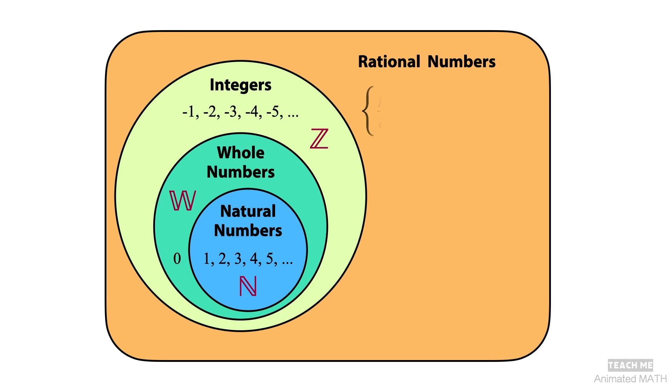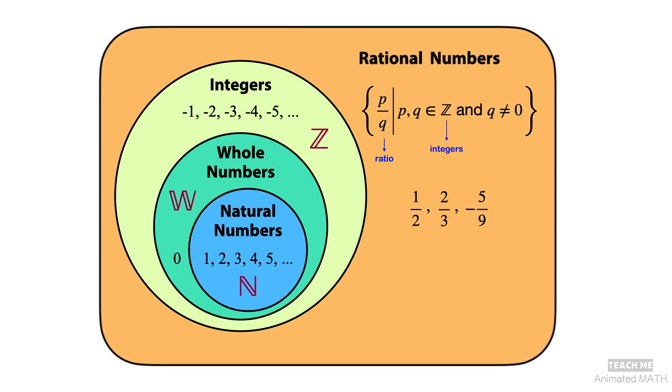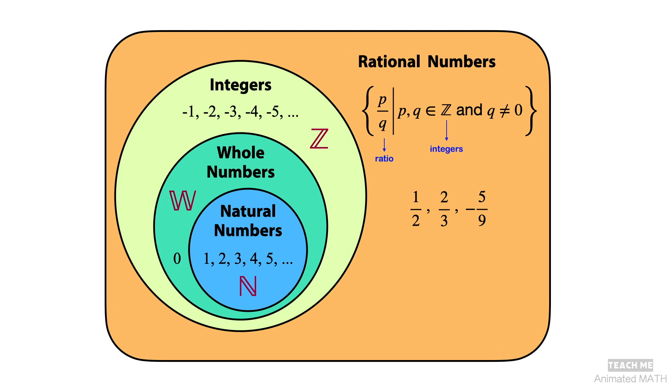Then, we learn about fractions. Remember those? A fraction is a ratio of two integers, but the denominator cannot be zero. Examples of fractions are 1 half, 2 thirds, and negative 5 ninths. This set is called the set of rational numbers.